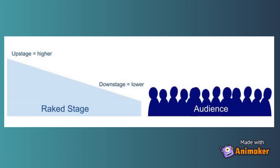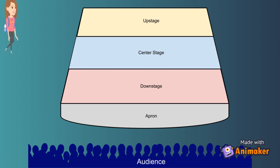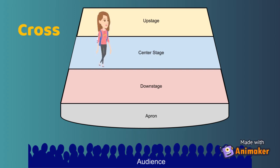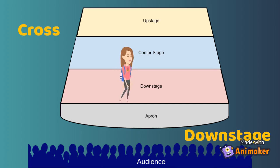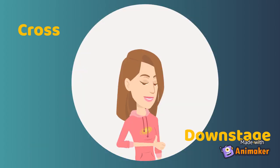This diagram demonstrates where we get our terms from. The director requested you to cross downstage, remember? According to this diagram, downstage is the area nearest to the audience, because on a raked stage this is the area that is literally lower to the ground. This is what our stages look like today, regardless of rake. Downstage is always nearest to the audience, while upstage is always farthest away from the audience. If your director asks you to cross downstage, she's asking you to move — cross — toward the audience, downstage.